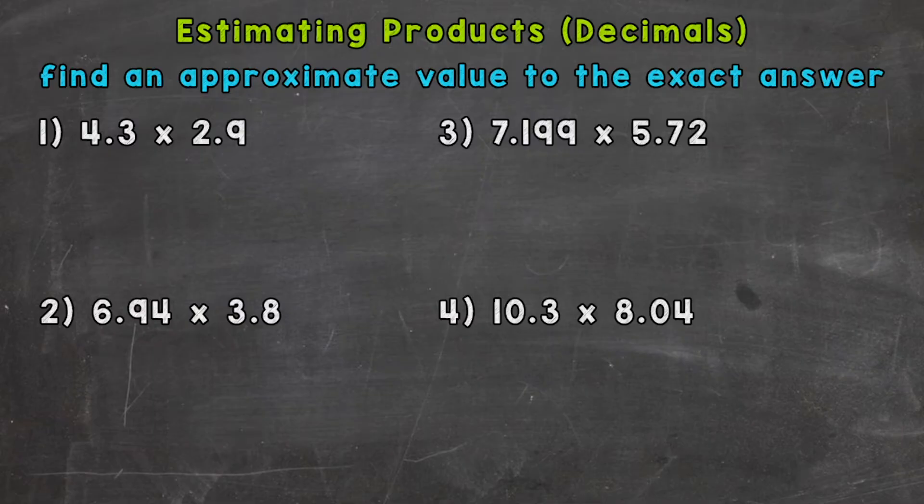Now when we estimate, we find an approximate value to the exact answer. So for each of these examples, we're going to round to the nearest whole number, multiply in order to get our estimate, and then check to see how it compares to the exact answer.